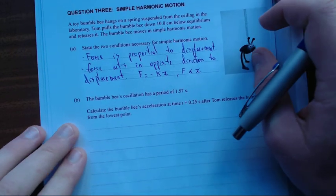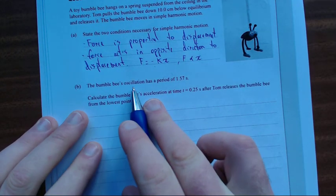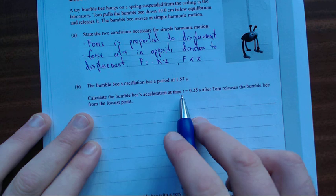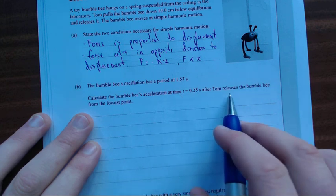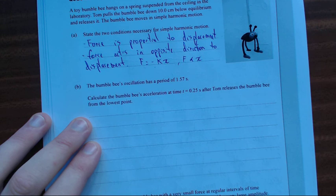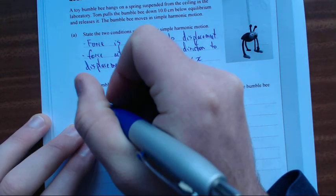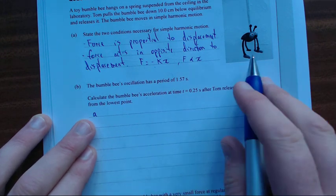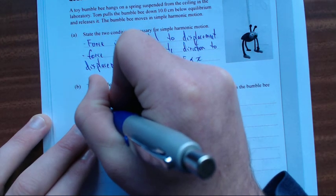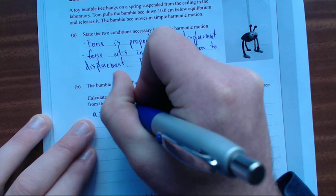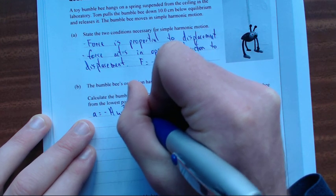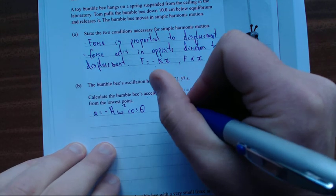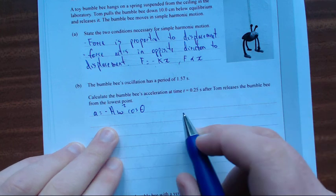The bumblebee's oscillation has a period of 1.57 seconds. Calculate the bumblebee's acceleration at time 0.25 seconds after Tom releases the bumblebee from the lowest point. If you jump onto your formula sheet, you'll find that acceleration a equals minus the amplitude times the angular velocity squared times cos theta.